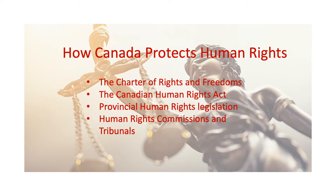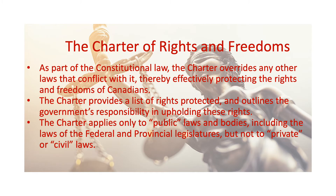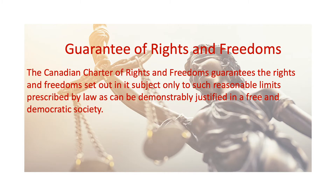But how here in Canada are human rights protected? The Canadian Charter of Rights and Freedoms exists to share these human rights and protect them here in Canada. As part of the constitutional law, the Charter overrides any other laws that conflict with it, thereby effectively protecting the rights and freedoms of Canadians. The Charter provides a list of rights protected and outlines the government's responsibility in upholding these rights. The Charter applies only to public laws and bodies, including the laws of the federal and provincial legislatures, but not to private or civil laws.